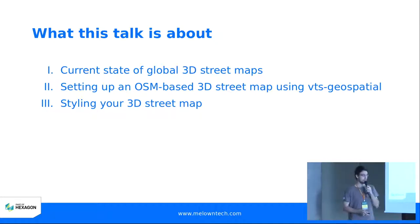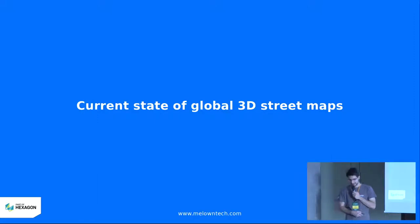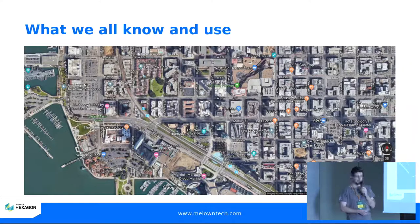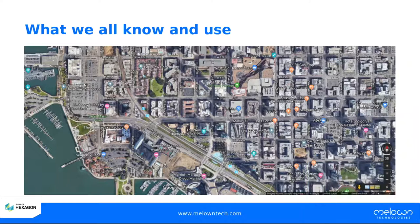Let's take a look at the current state of global 3D street maps. You all know this — there's a good chance you use it every day. This is probably the only true vector, true 3D street map you may know. Apart from that, I don't know if there are any more implementations. This is basically what you know as Google Maps.